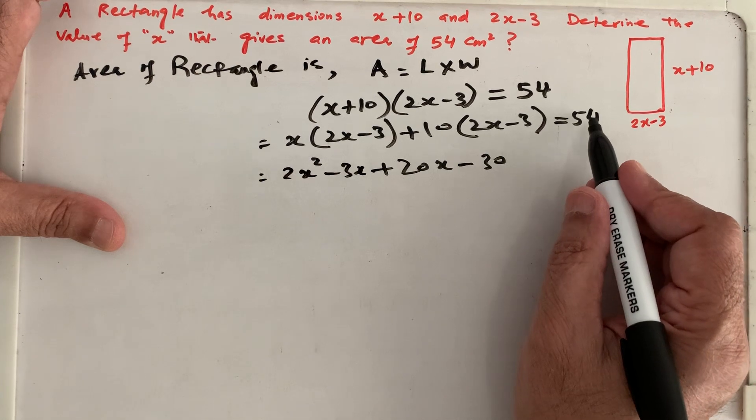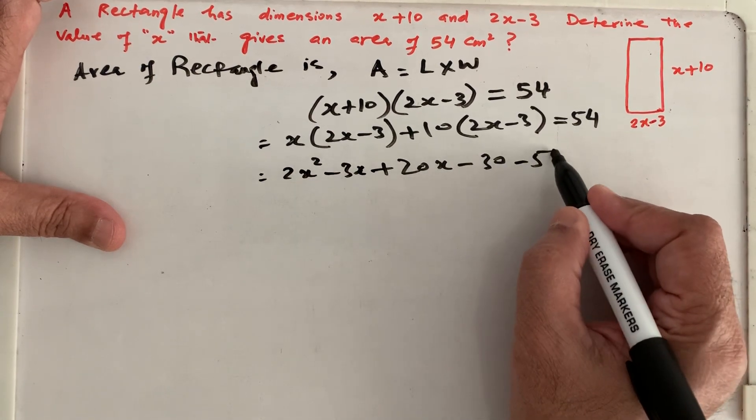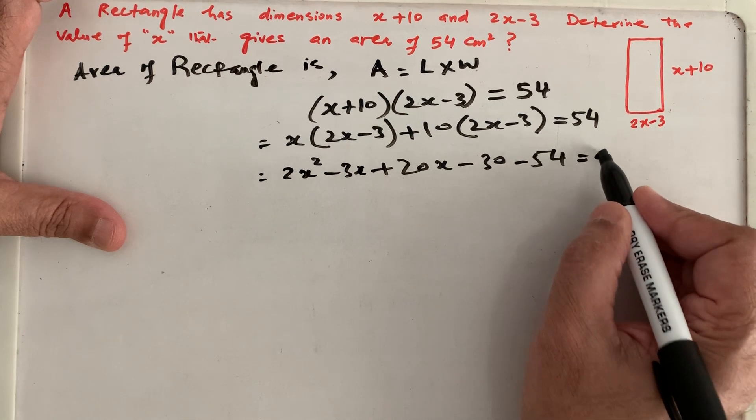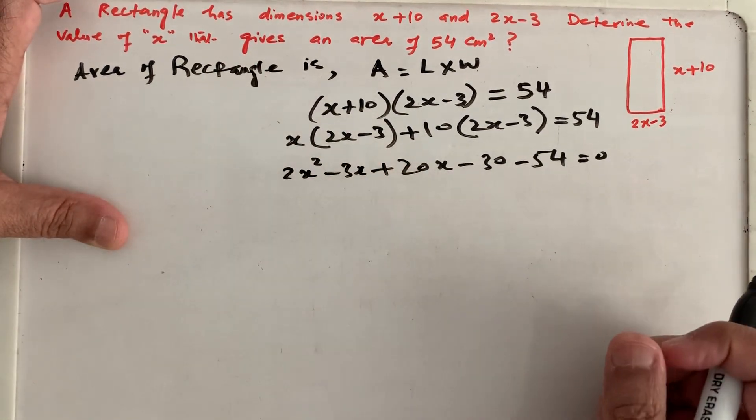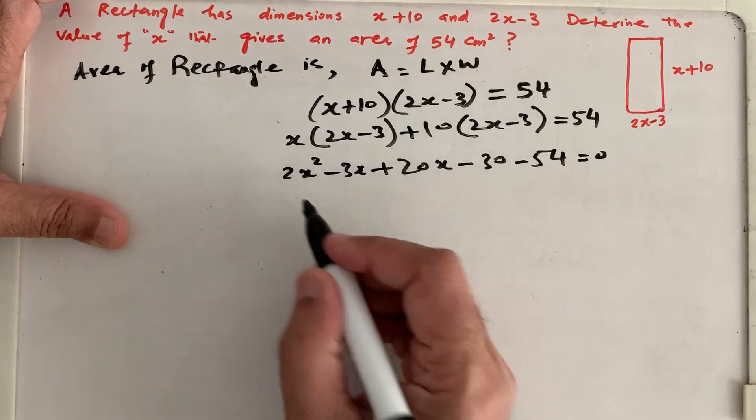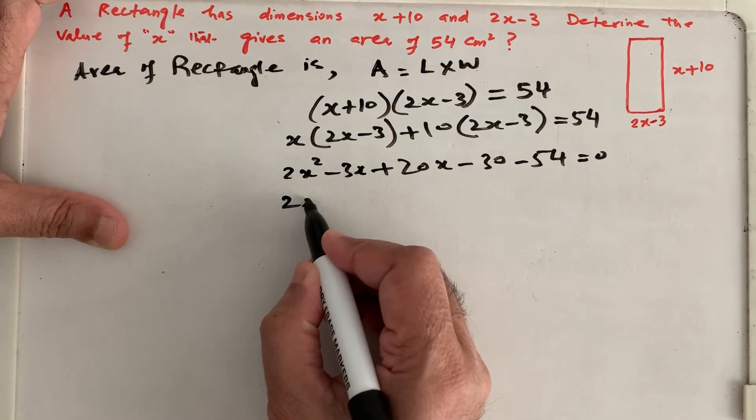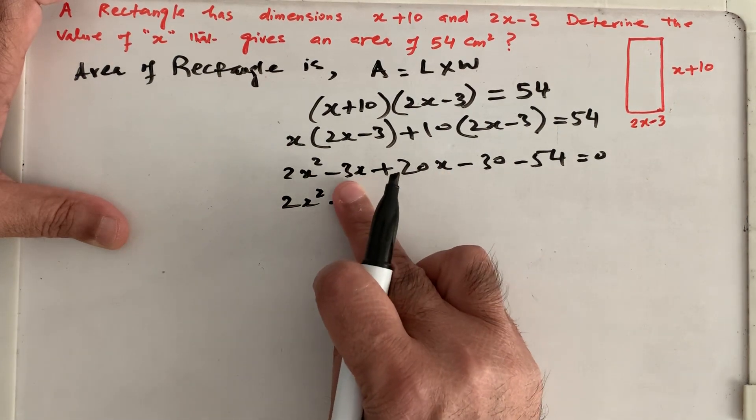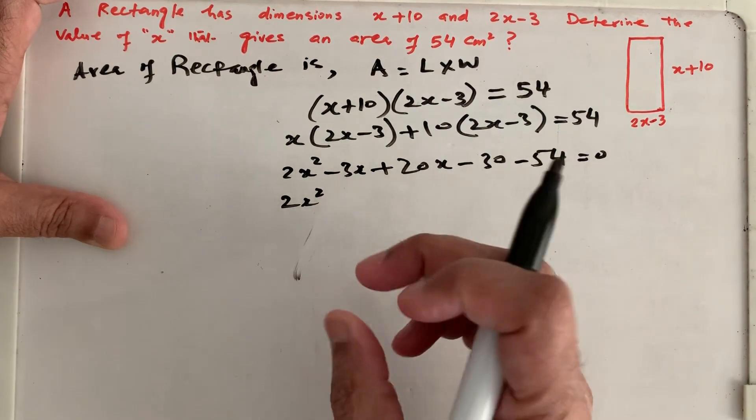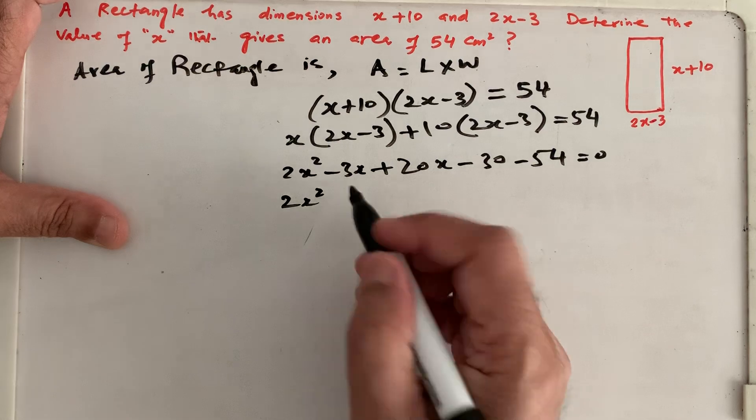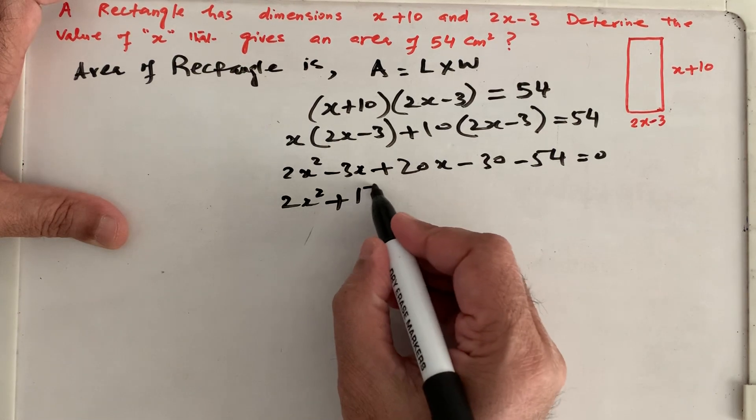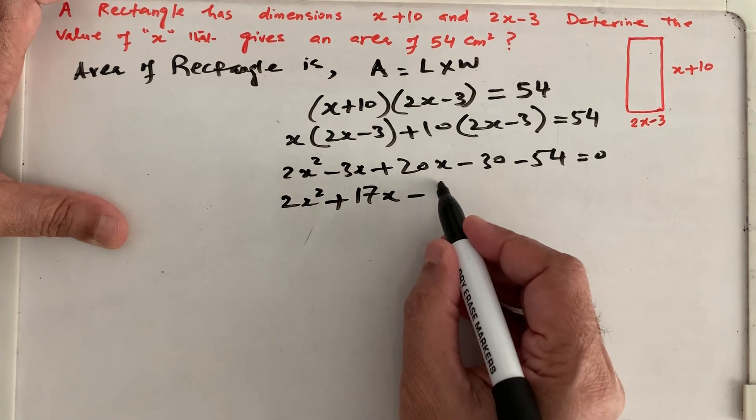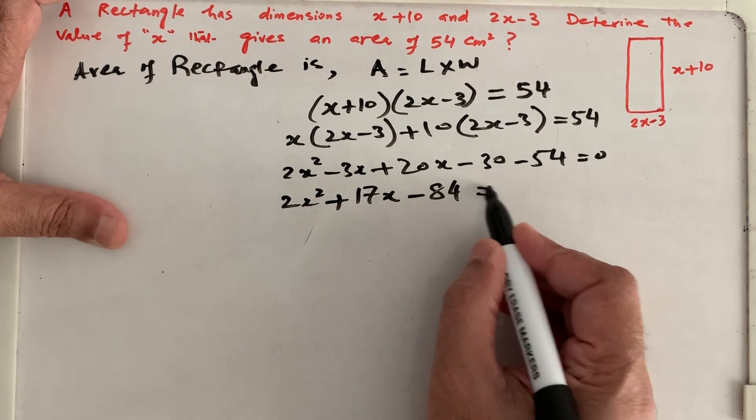And if we bring this 54 to this side, it will be minus 54. And now we can say that it's equals to 0. So now we have 2x square minus 3x and plus 20x, 17x plus 17x minus 30 and minus 54 gives you minus 84 equals to 0. This is our quadratic function or quadratic equation.